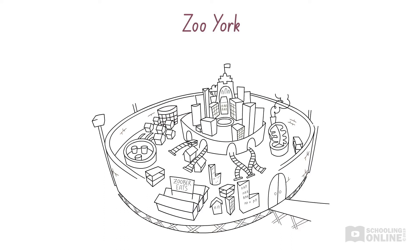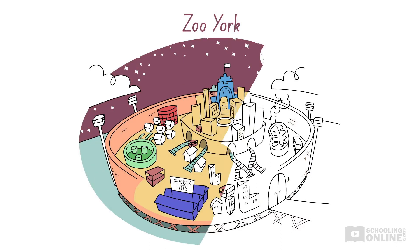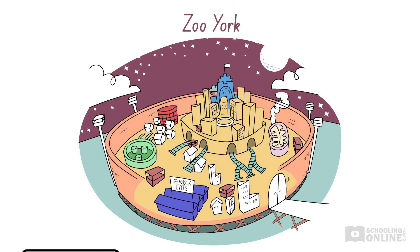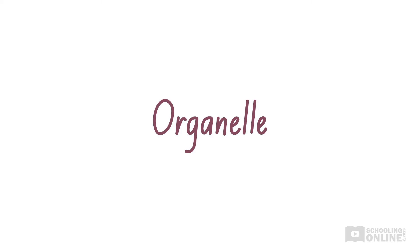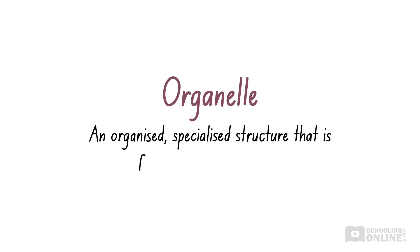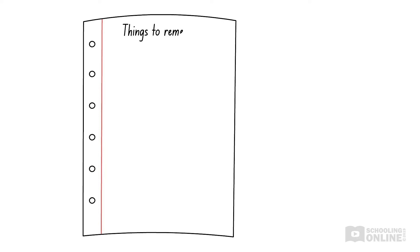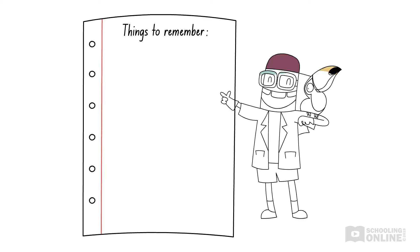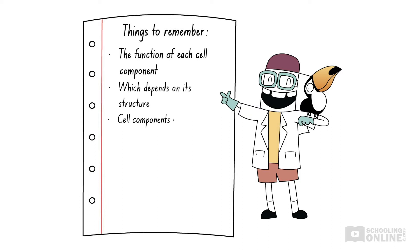It's time to explore the city's depths and learn more about the structure of animal cells. So far, Sally's explored a range of organelles, which are organised, specialised structures that are found in eukaryotic cells. In this third lesson on animal cells, we'll continue exploring the functions of animal cell components and their structures. Of course, the individual animal cell components need to cooperate with each other.